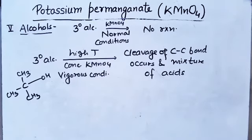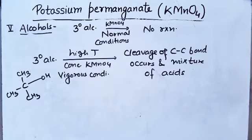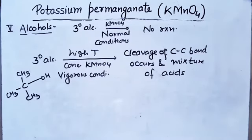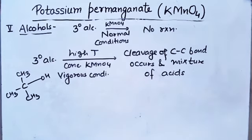So friends, I have explained all the reactions of KMnO₄ with various organic compounds in a very simple way — alkenes, alkynes, alkanes, aromatic hydrocarbons, and alcohols. Aldehydes also change into acids. Depending on conditions — cold or hot, acidic or basic medium — KMnO₄ has different actions on these reagents. From a competitive exam point of view, this video lecture is very important. Please watch it once. Thank you.